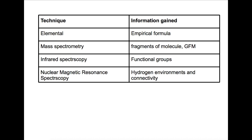We're going to focus on organic spectroscopy today, looking at compounds which contain carbon. The four types of spectroscopy we're looking at are elemental analysis which allows you to find the empirical formula, mass spectrometry which allows you to find fragments and the gram formula mass, infrared spectroscopy which allows you to find functional groups, and finally nuclear magnetic resonance spectroscopy which allows you to find hydrogen environments, numbers of hydrogens in those environments, and their connectivity.